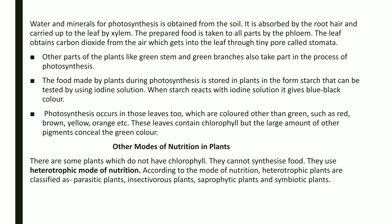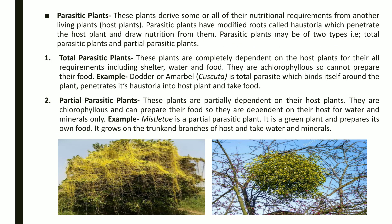Now we move to other modes of nutrition in plants. We have completed autotrophic nutrition; next is heterotrophic. Heterotrophic nutrition is when a plant depends on other living plants for its nutrition. Under heterotrophic nutrition, we will study four important types of plants: parasitic plants, insectivorous plants, saprophytic plants, and symbiotic plants.